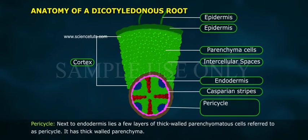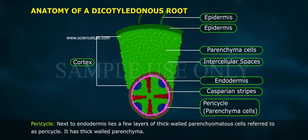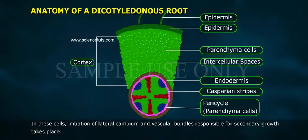Pericycle: Next to the endodermis lies a few layers of thick-walled parenchymatous cells, referred to as the pericycle. In these cells, initiation of lateral cambium and vascular bundles responsible for secondary growth takes place.